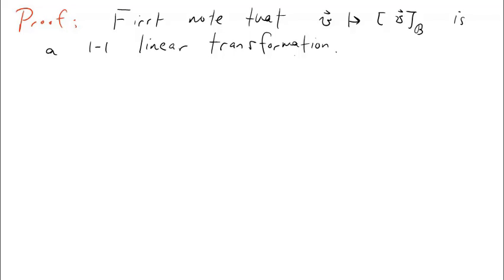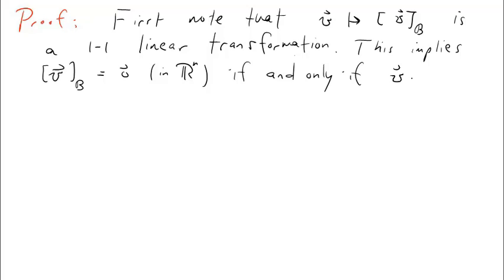So here's the proof. First, we note that the coordinate mapping is a one-to-one linear transformation. Therefore, the coordinate vector of v equals 0 in Rn if and only if v itself equals 0. This is because the only vector a one-to-one linear transformation maps to 0 is 0 itself.